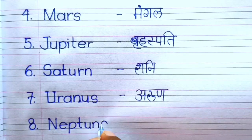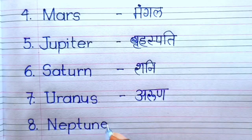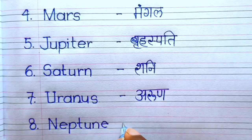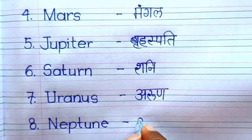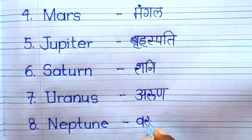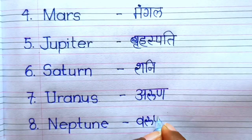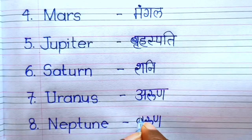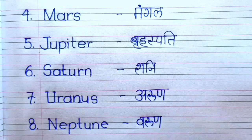Number 8. Neptune — N-E-P-T-U-N-E. Neptune means varun. Thanks for watching students. Please subscribe to my channel and click the bell icon. Thank you. Bye-bye.